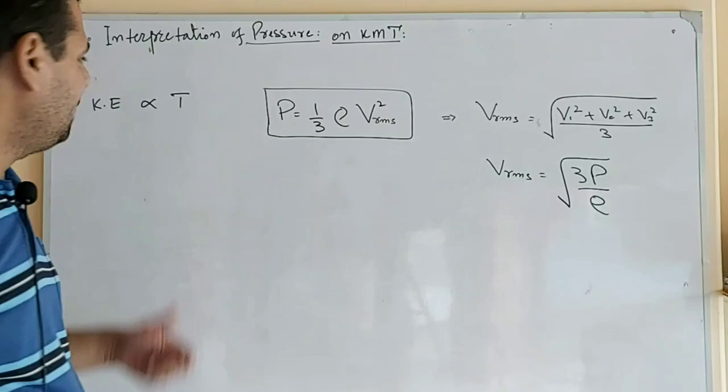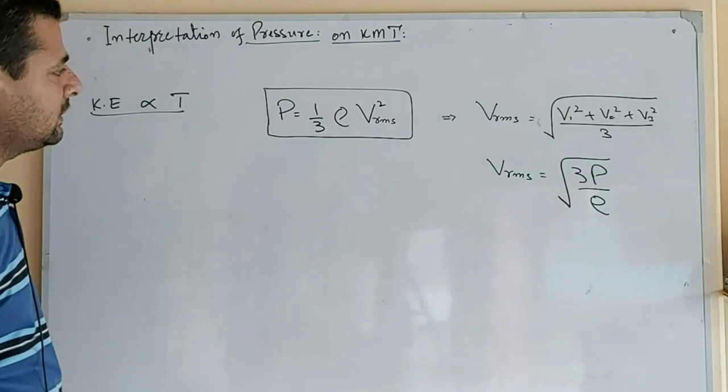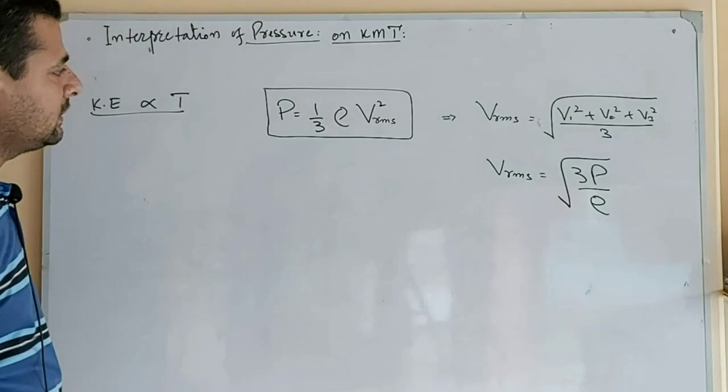V RMS is directly proportional to temperature. Temperature is directly proportional to average kinetic energy. Now we are going to reverse the steps in the equation.